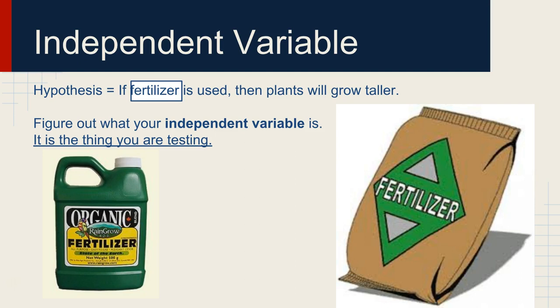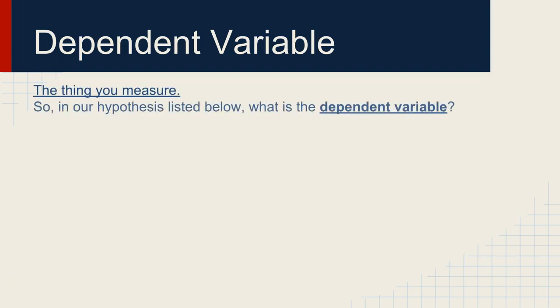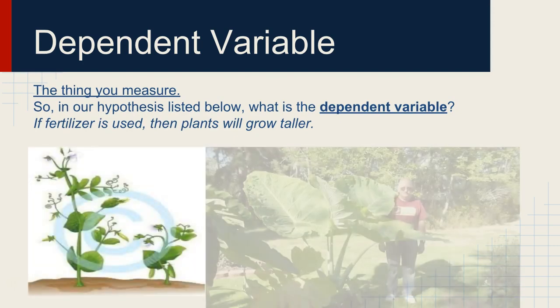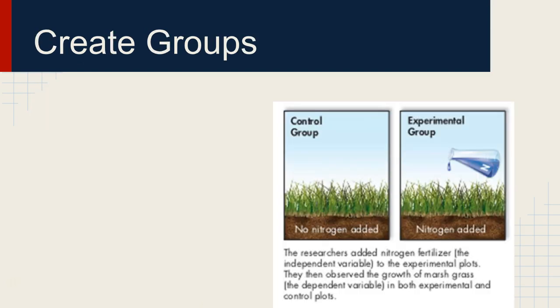It is going to be the only thing that's different between our two groups. The dependent variable is the thing that we are going to measure. So if that's our hypothesis, if fertilizer is used, then plants will grow taller. Our dependent variable is the thing that we are going to measure. Independent variable is the thing we're testing. Dependent variable is the thing that we are going to measure.